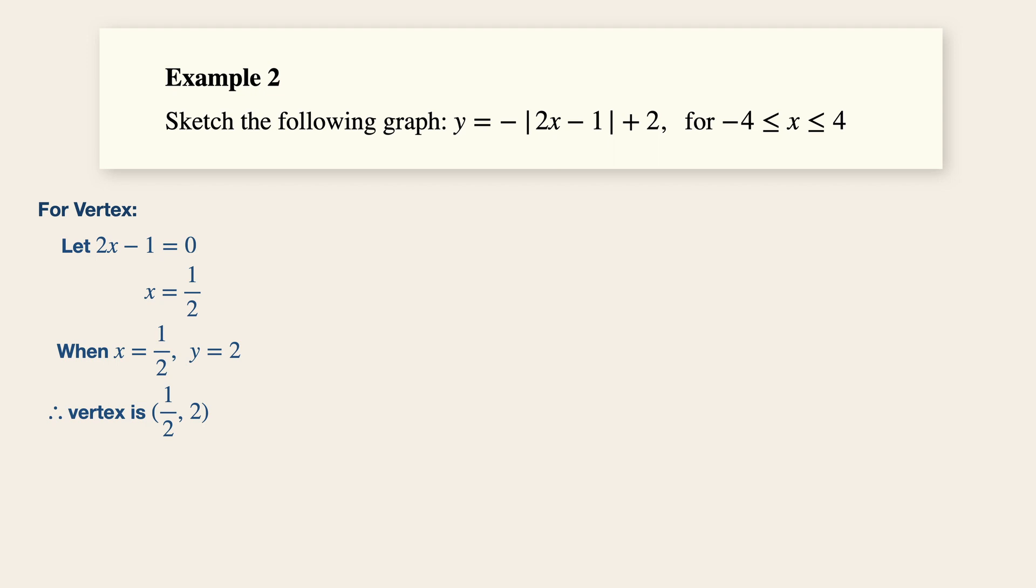Now for the y intercept, when x is equals to zero, y is equals to minus minus one modulus plus two. And this gives us a value of one.